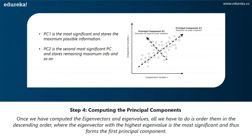Once you finalize your eigenvectors and eigenvalues, you order them in descending order where the eigenvector with the highest eigenvalue is the most significant, and that will form the first principal component. You can then remove the lesser significant principal components in order to reduce the dimension of your data — that's as logical as it gets. In this step, you also form a matrix known as the feature matrix, which contains all the significant principal components that possess the maximum information about the data.